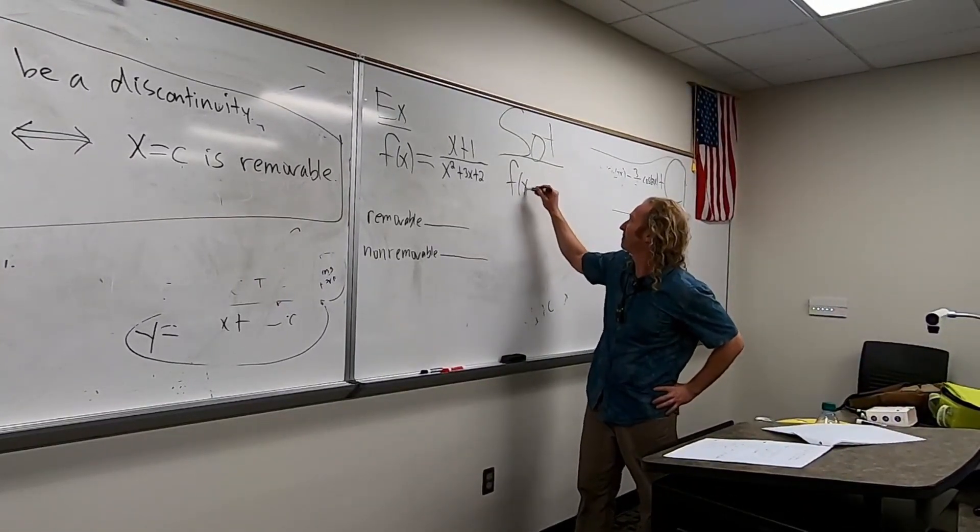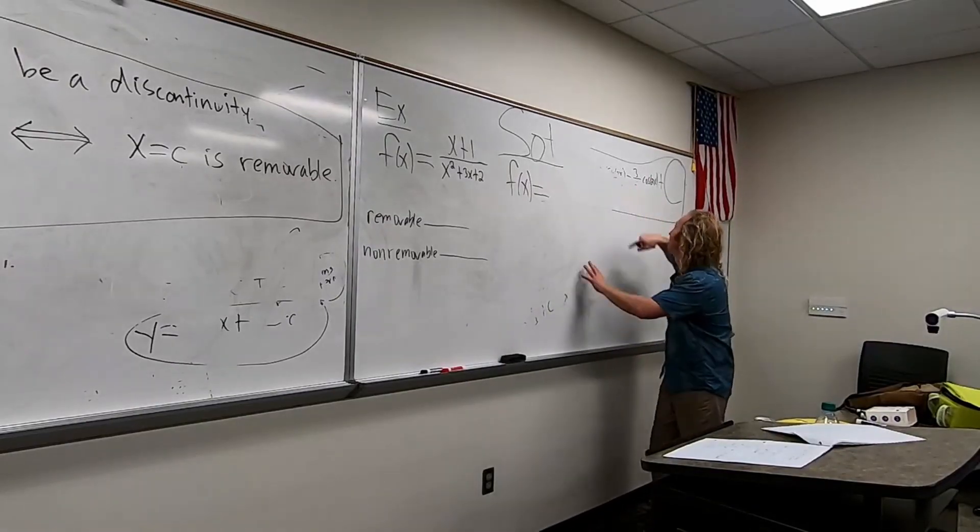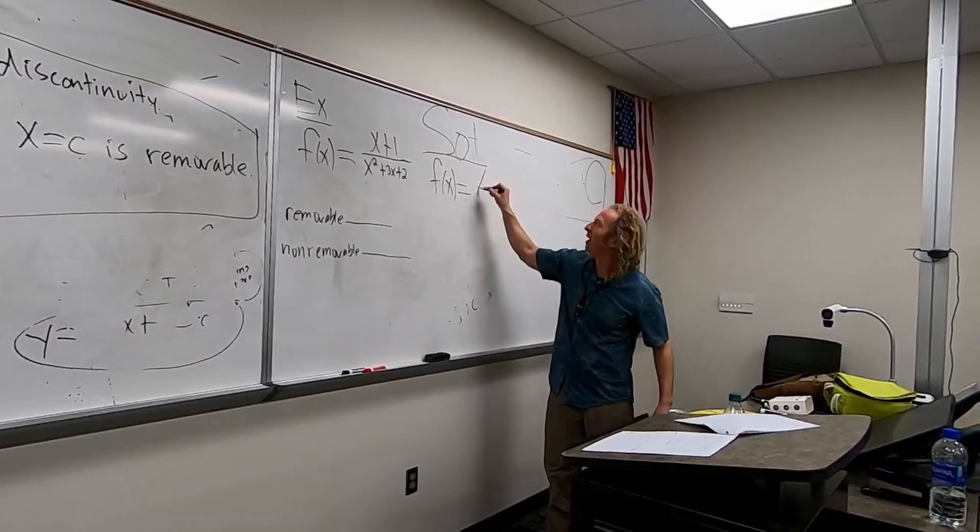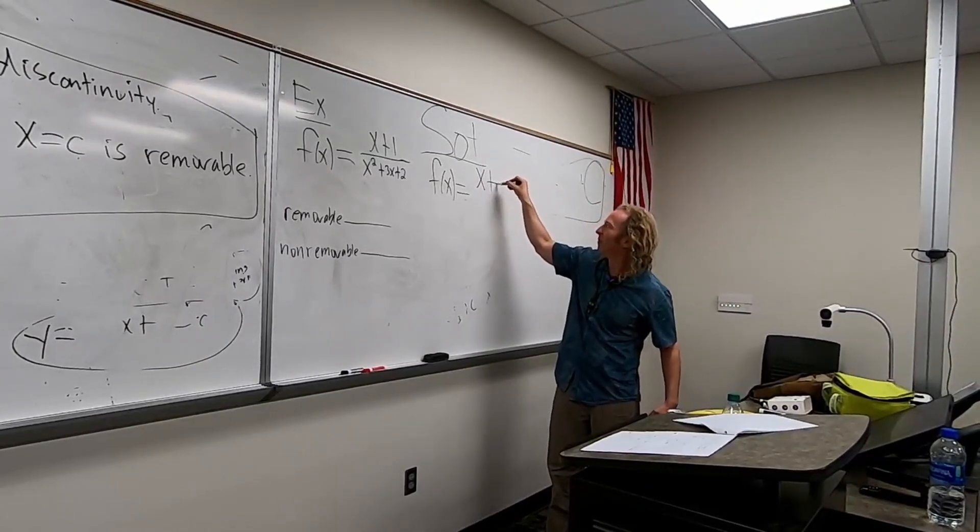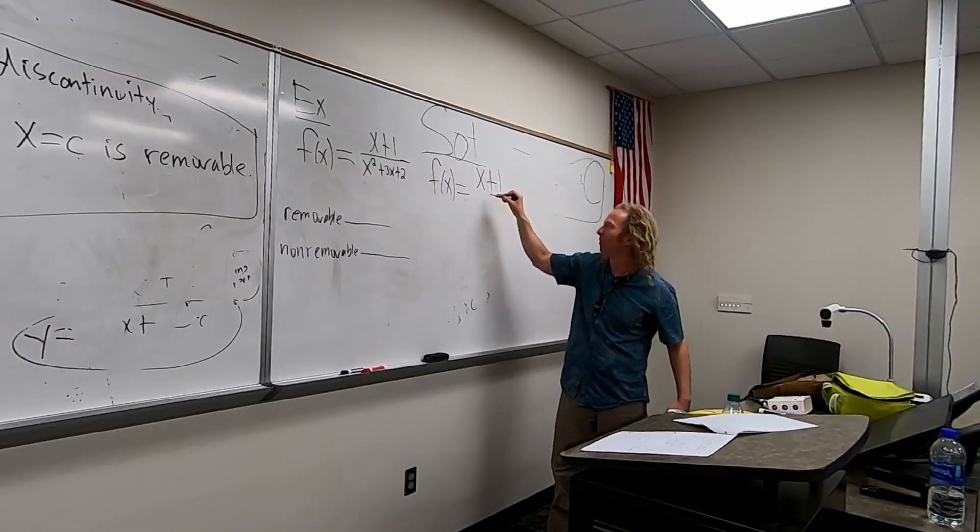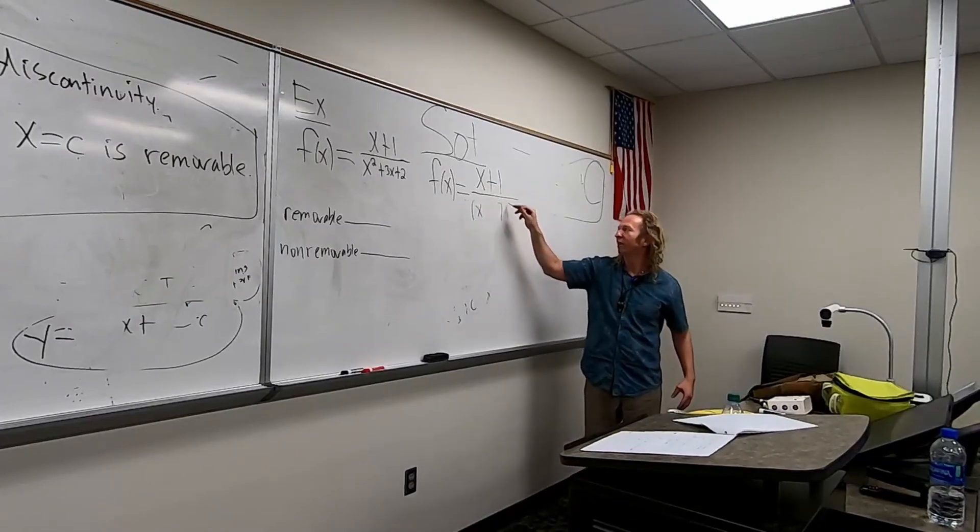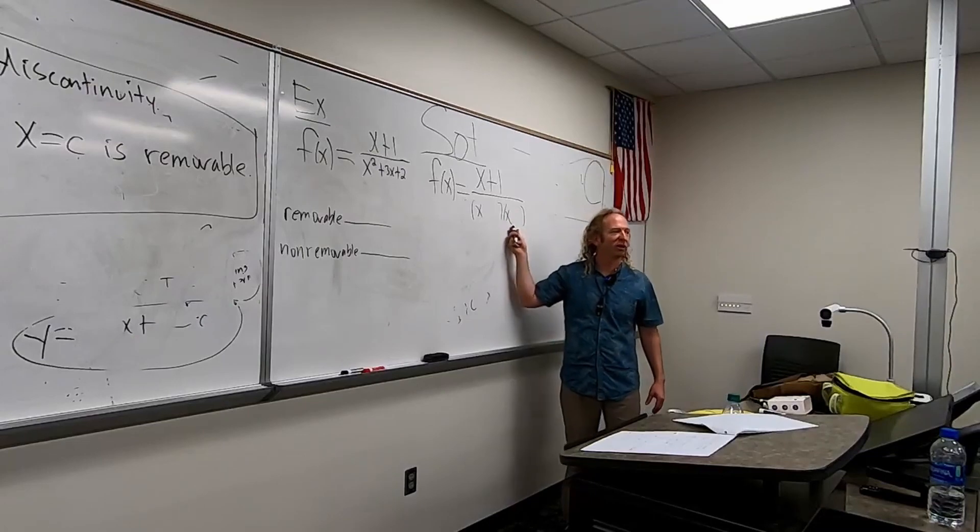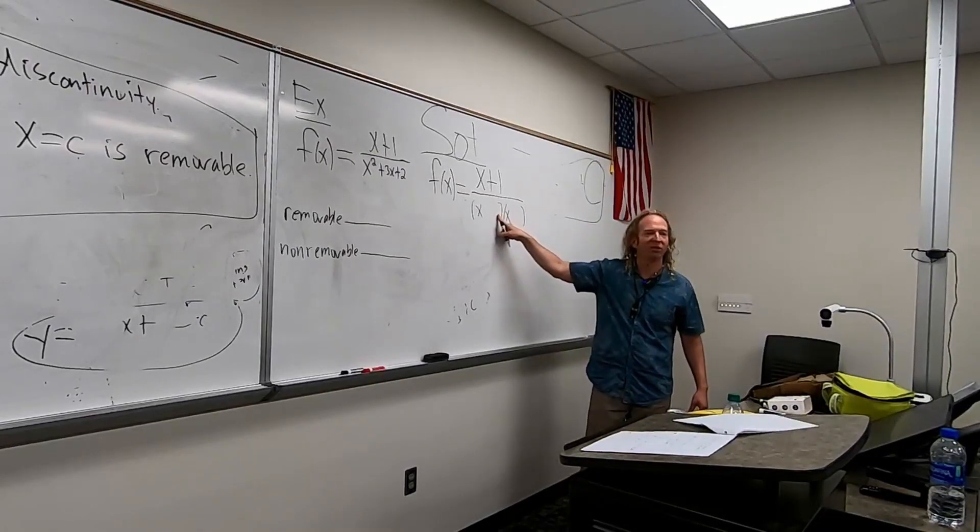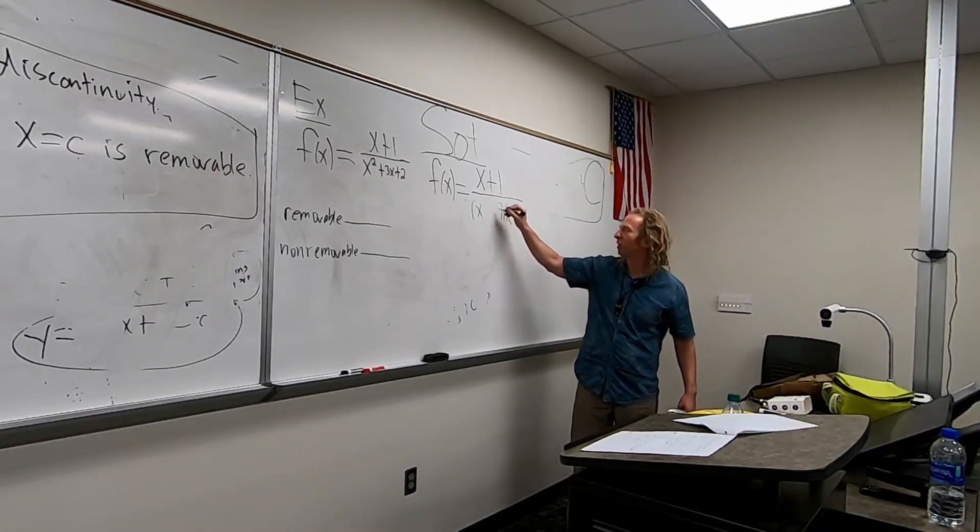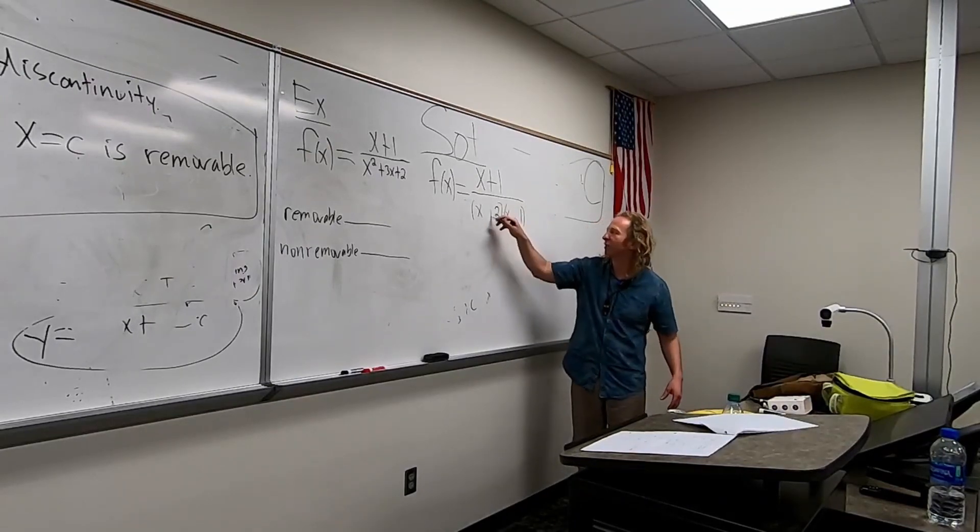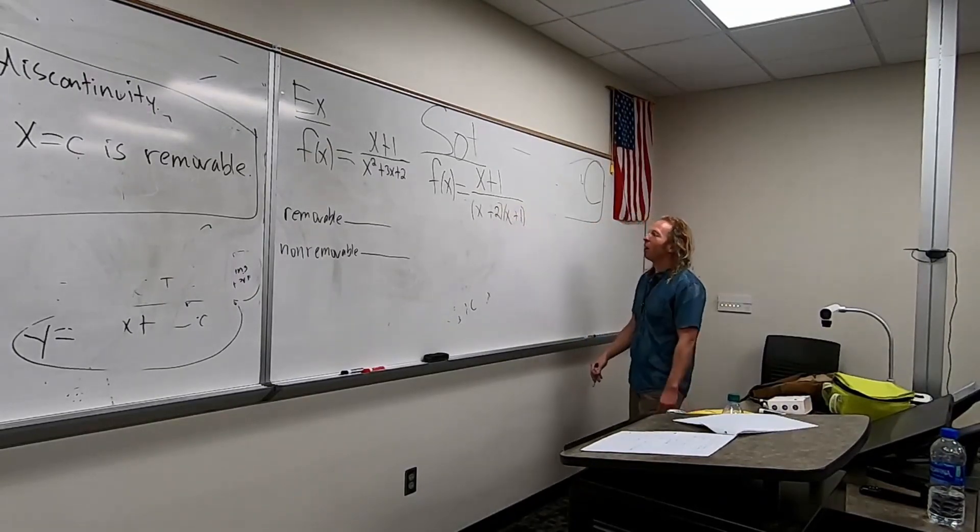All right, f of x. This is why I messed up in my other class and I lost points when I was on this board. It's like trauma. x plus 1, right? And then on the bottom, I think there's an x here and there's an x here. Because they have to multiply to x squared. Two numbers that multiply to 2 and add to 3. 2 and 1. And they're both plus or minus? Plus. Yeah, plus. Beautiful.